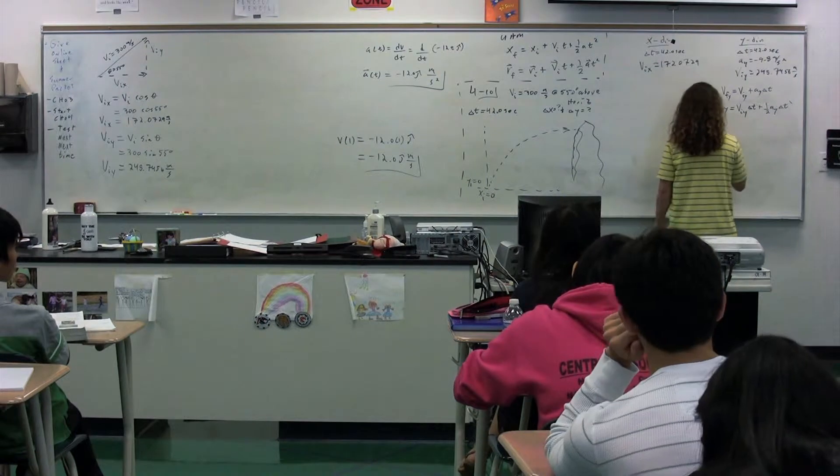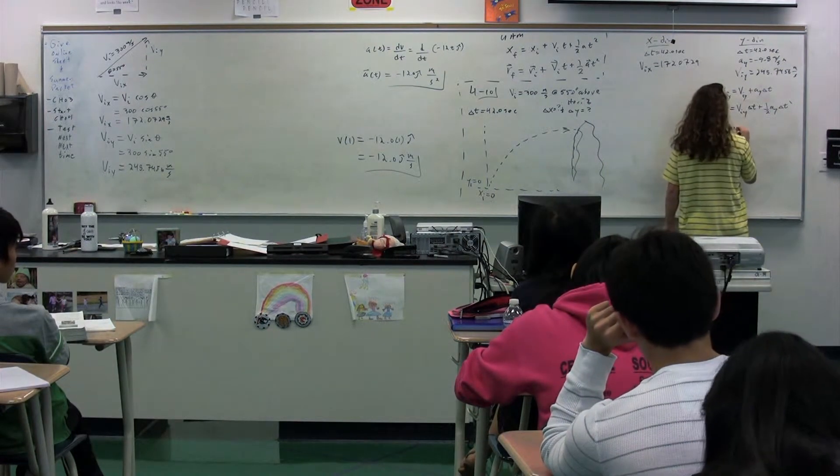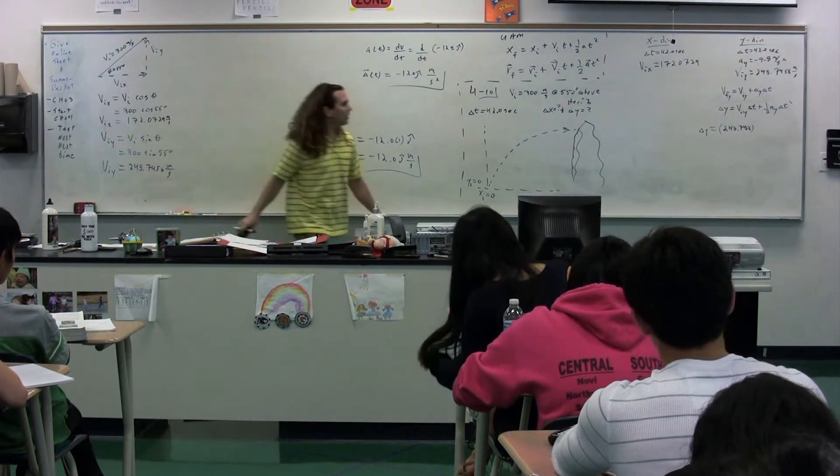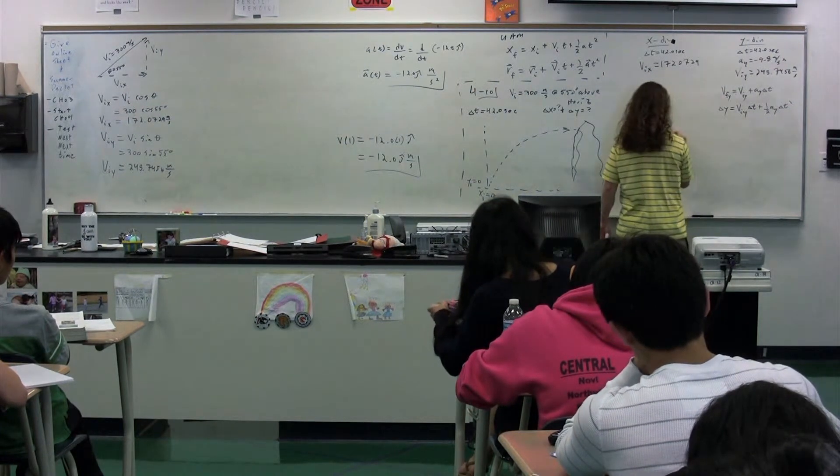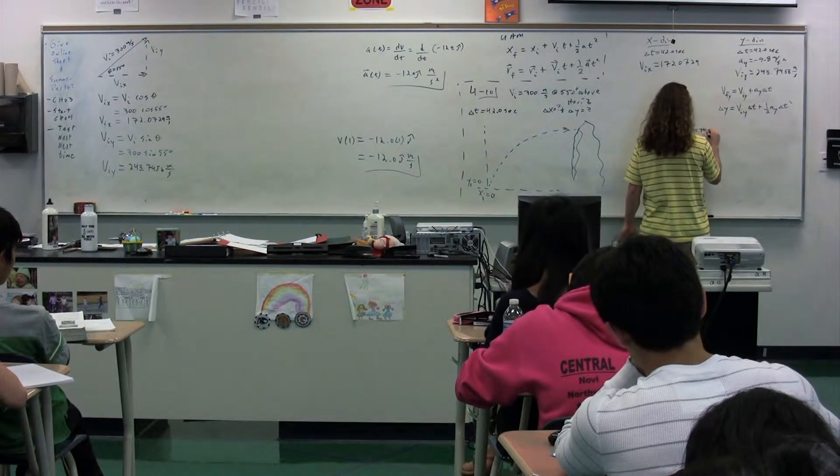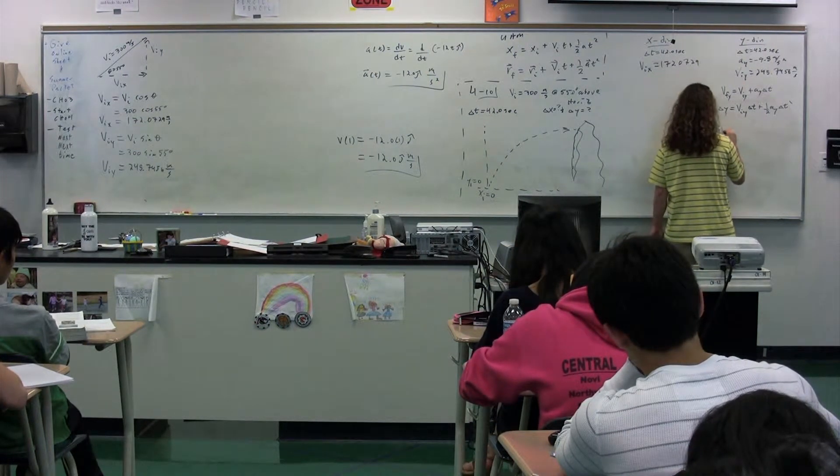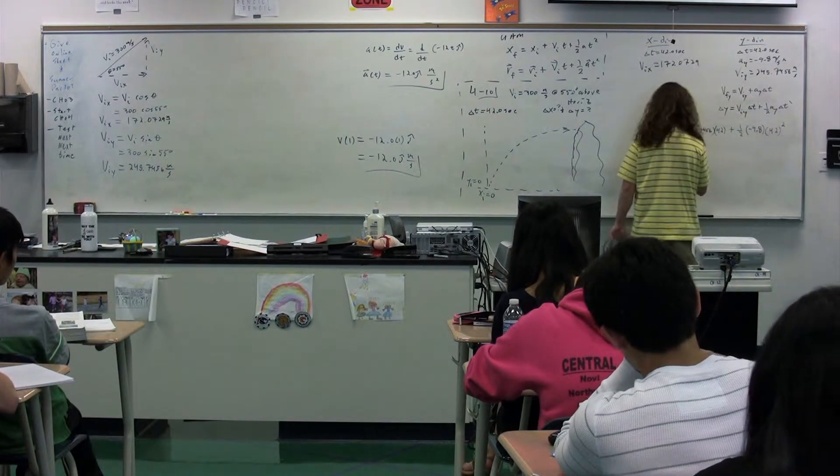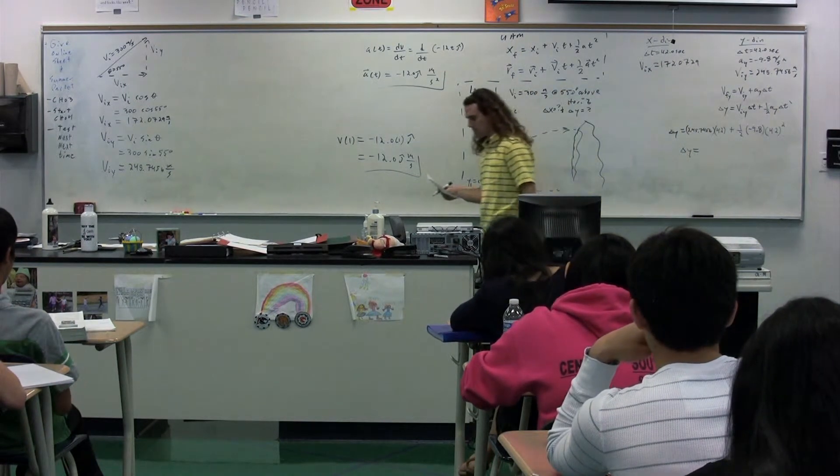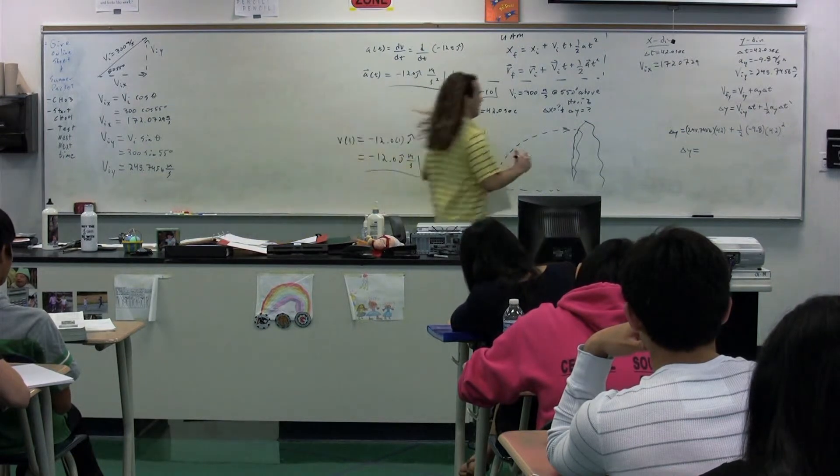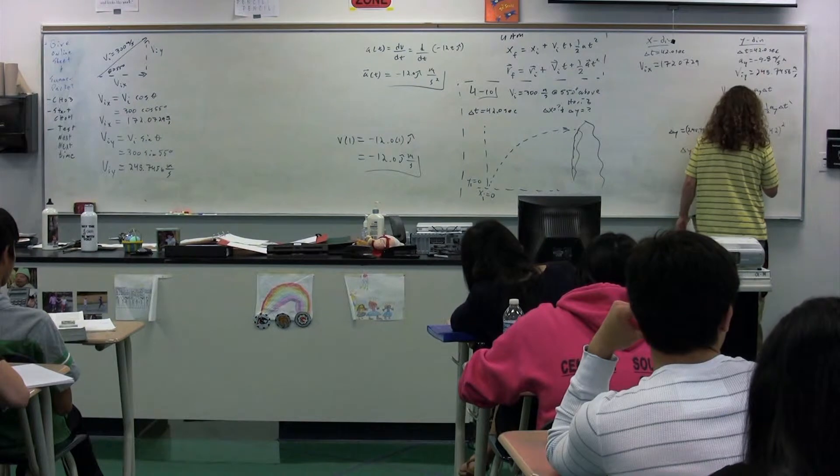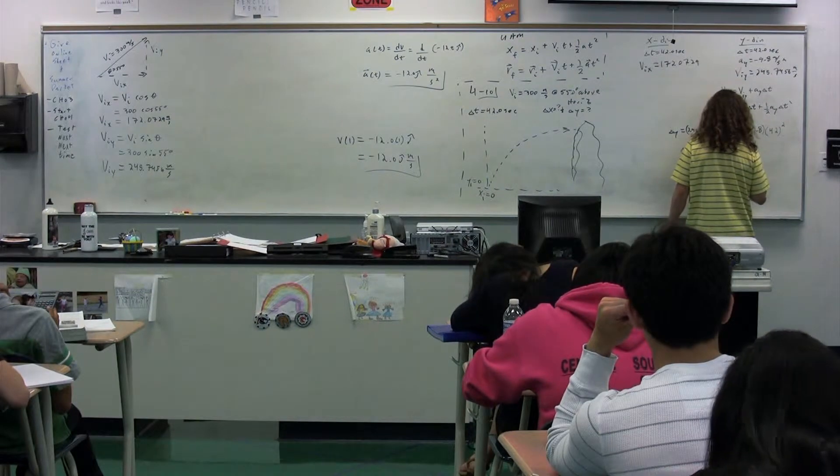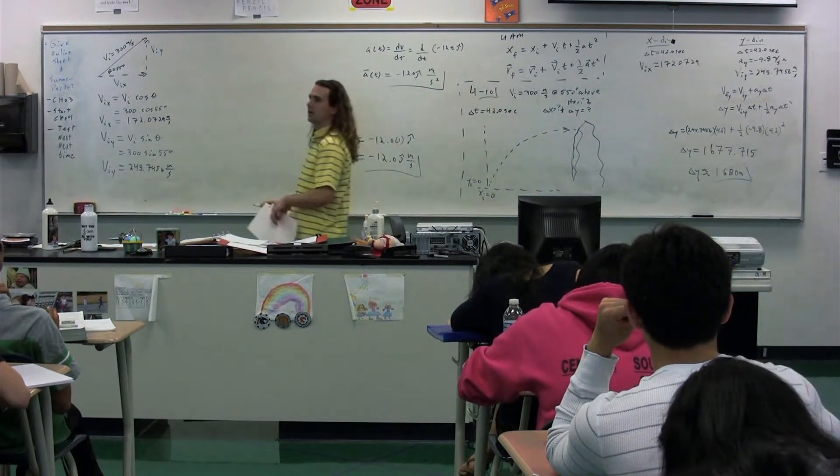So we can use the other equation, delta y is equal to velocity initial in the y direction times delta t plus one-half times the acceleration in the y direction times delta t squared. Delta y equals 245.7456 times 42 plus one-half times negative 9.8 times 42 squared. The change in y with three sig figs is 1,680 meters. We have figured out the displacement in the y direction relative to where it was launched.